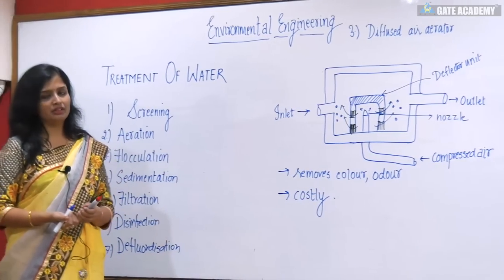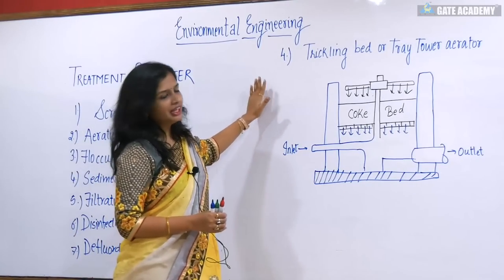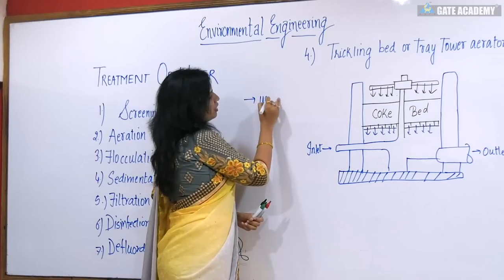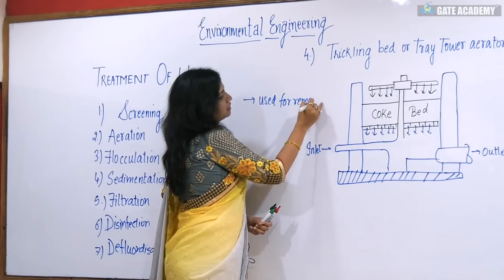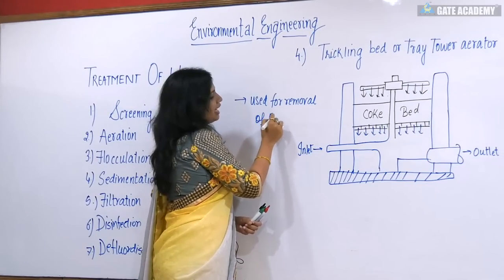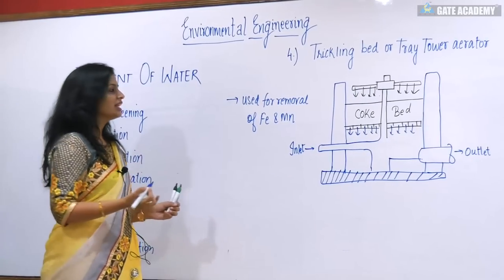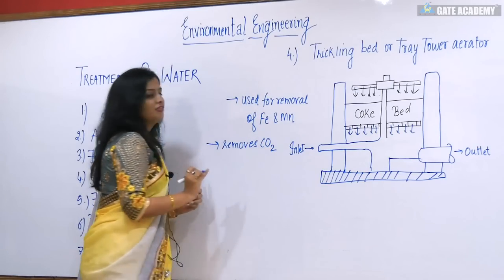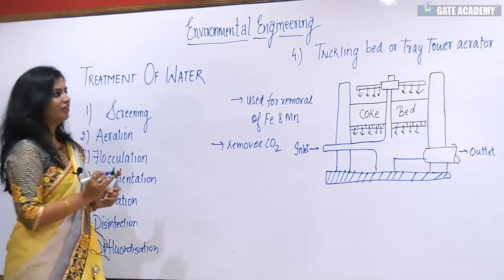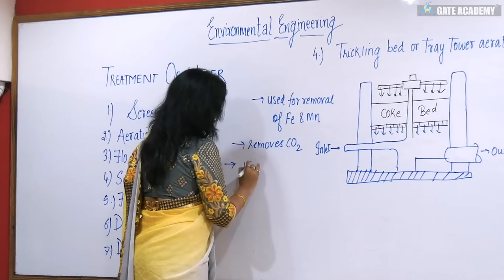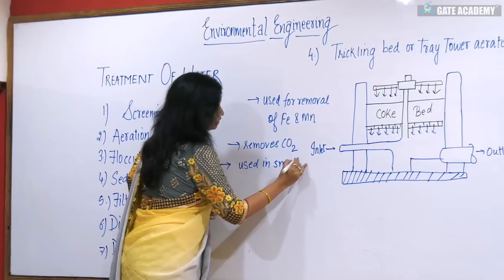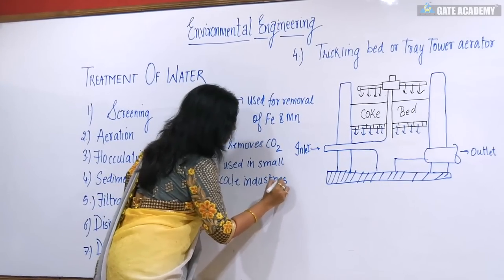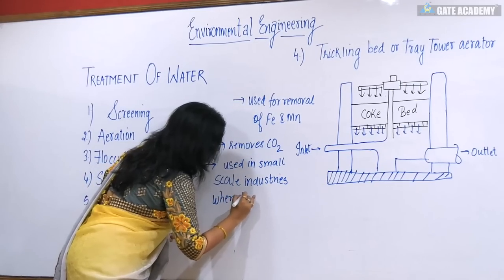After this, we will be studying the trickling bed or tray tower aerator. It is used for removal of iron and manganese, and is very helpful in removing carbon dioxide from the water. This is used in small scale industries where the discharge is very less.